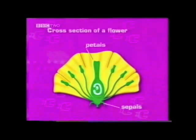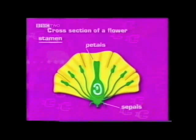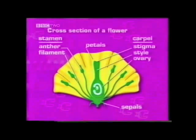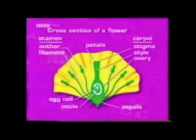The other main structures you should have drawn are the male part, or stamen, made up of the anther and the filament. The female part is called the carpel, and is made up of the stigma, style, and ovary. In the ovary is the ovule, which contains the egg.